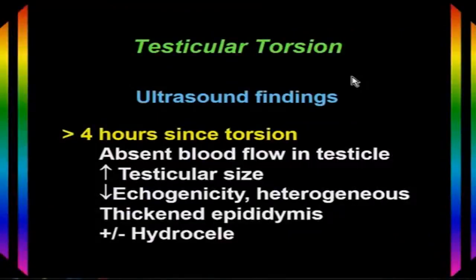After four hours, the testicle becomes enlarged and edematous. It may have decreased echogenicity, and the echogenicity may become heterogeneous. We'll still have no blood flow inside the testicle. We also may see thickening of the epididymis or the knot of the twisted cord, and a hydrocele may develop after four hours.